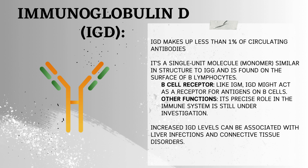Immunoglobulin D (IgD) — the enigmatic immune player. IgD makes up less than 1% of circulating antibodies and its exact function remains largely a mystery. It's a monomer, similar in structure to IgG, and is found on the surface of B lymphocytes. Like IgM, IgD might act as a receptor for antigens on B cells, but its precise role is still under investigation. Increased IgD levels can be associated with liver infections and connective tissue disorders.